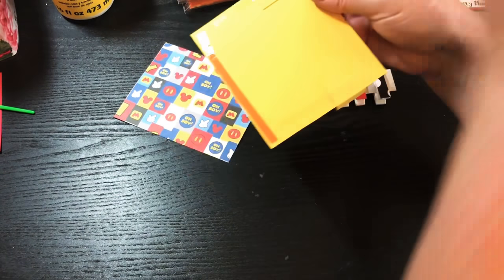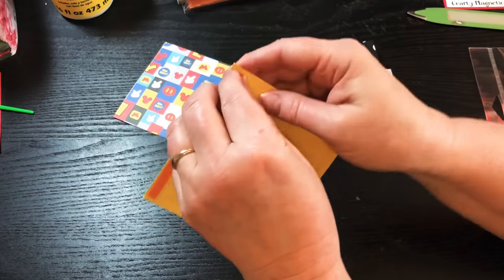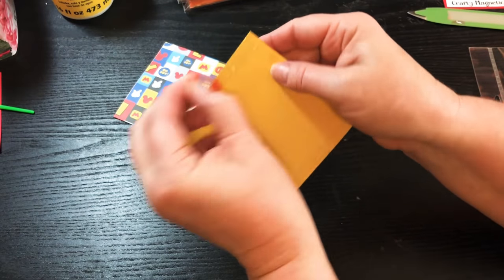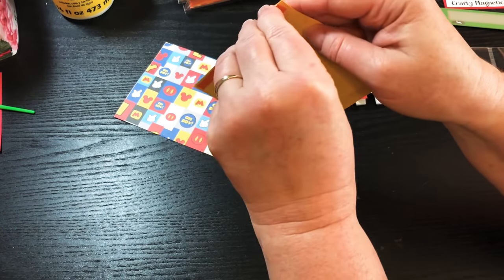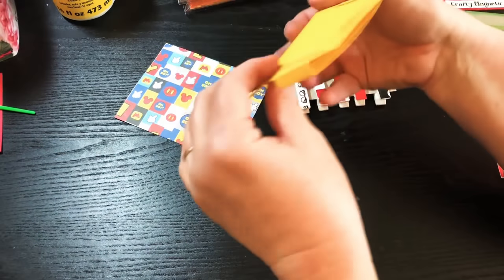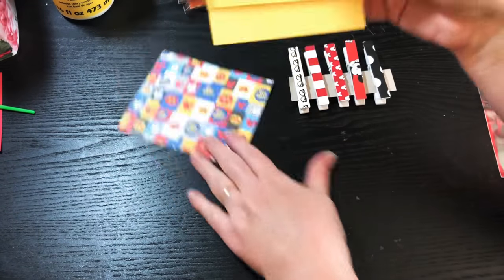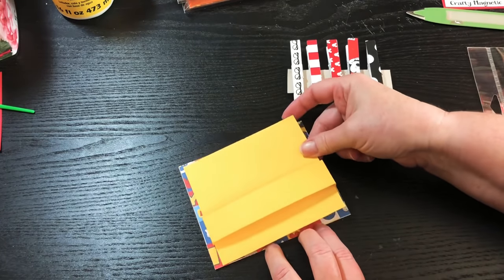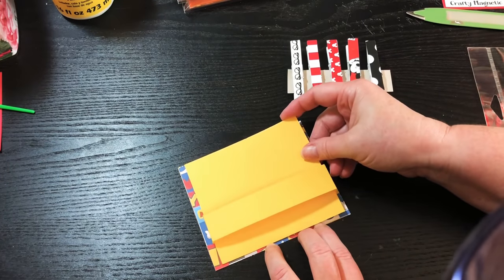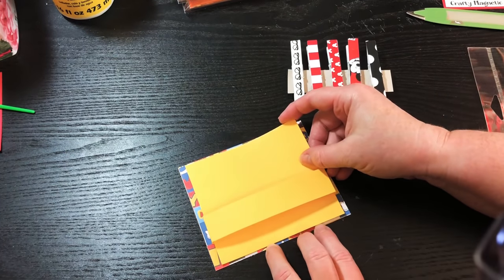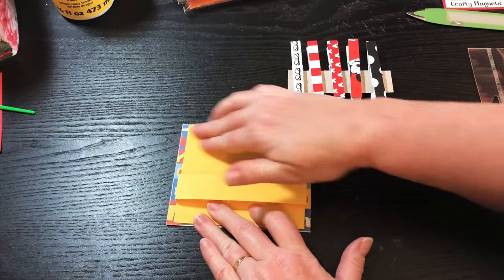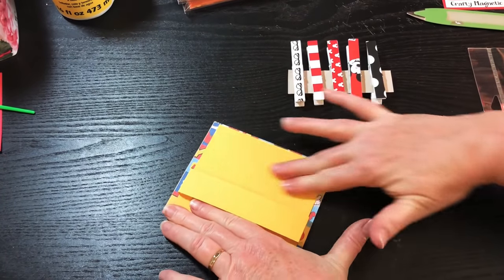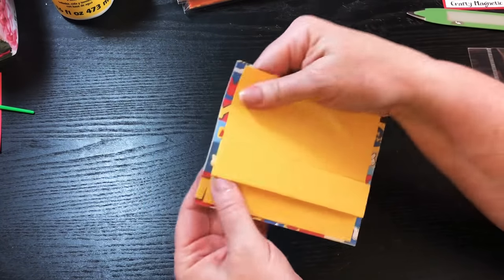So now what I'm going to do is I'm going to put some adhesive on the back of this one and I am going to get it stuck down to my designer paper. You can use any paper you want. You can use solid paper all along the thing if you want, but I kind of thought it's fun just to use some designer paper on the back just to get some nice design on it.